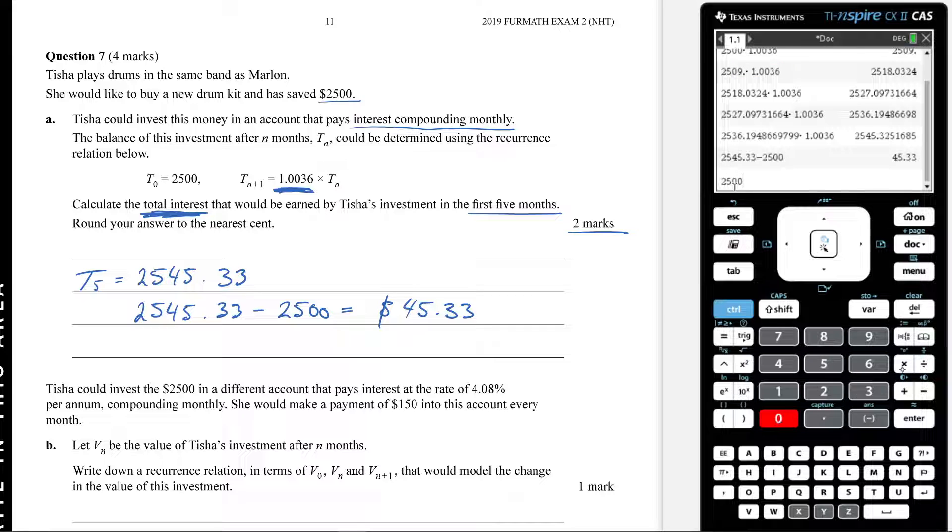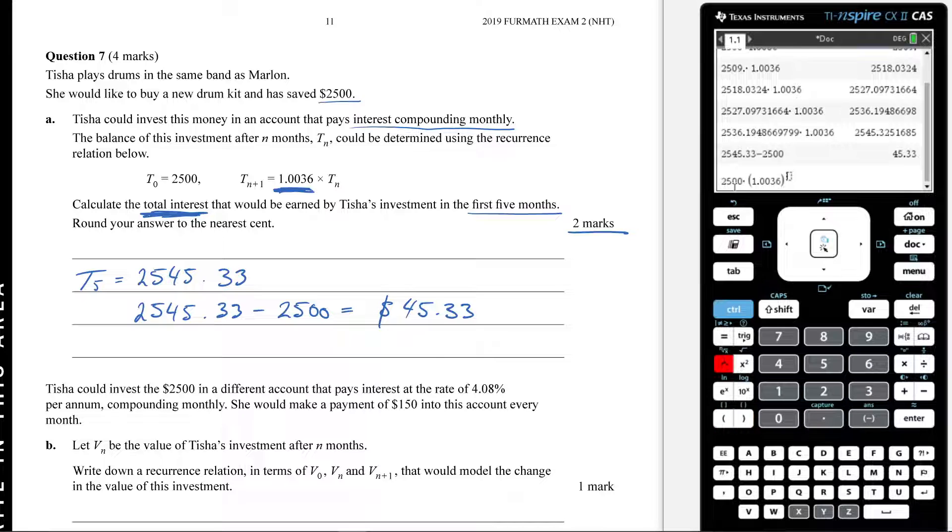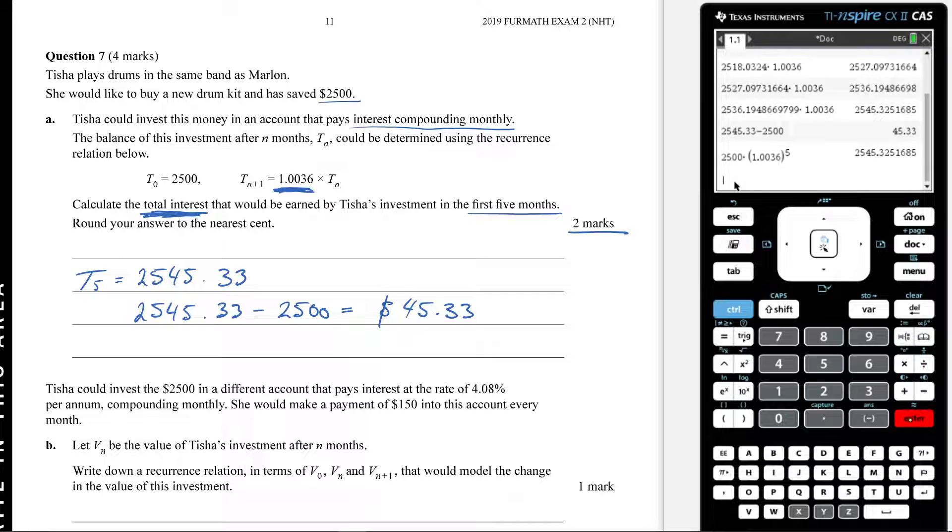$2,500 times, now open your brackets, 1.0036, and then I'm going to raise that to the power of five. And that's going to give me 2545.325. So that's just creating a general rule and then subbing in five. So I think it's important that you understand both ways of doing it to have the most success.